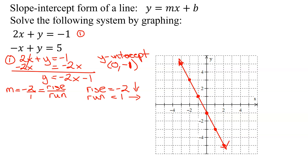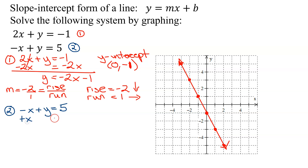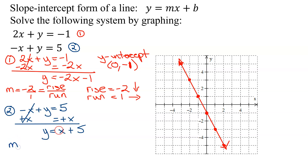Now we've graphed our first line. Now we need to look at our second line. Equation 2 is negative x plus y equals 5. To get it in slope-intercept form, all I have to do is add x to both sides, and I get y equals x plus 5. So what is the slope? The number in front of x is just 1, so I'll write it as the fraction 1 over 1.